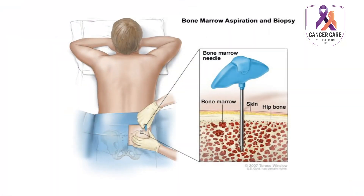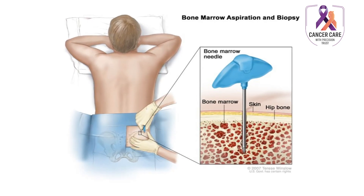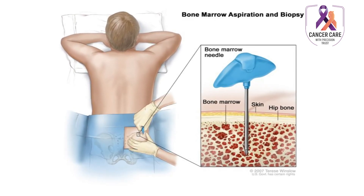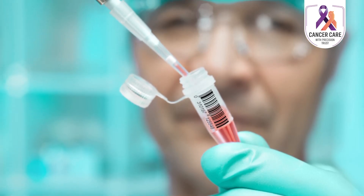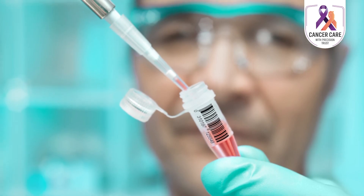Number seven is bone marrow aspiration biopsy. Bone marrow is the soft tissue and liquid present within the bone. Doctors sometimes may need to take a bone marrow biopsy to diagnose certain types of cancer, including blood cancer. Usually, the pelvic bone is the site from where the biopsy is taken. Number eight is liquid biopsy — a latest innovation in oncology where doctors take a blood sample to check for different molecular or genetic characteristics or different types of mutations in circulating tumor cells.